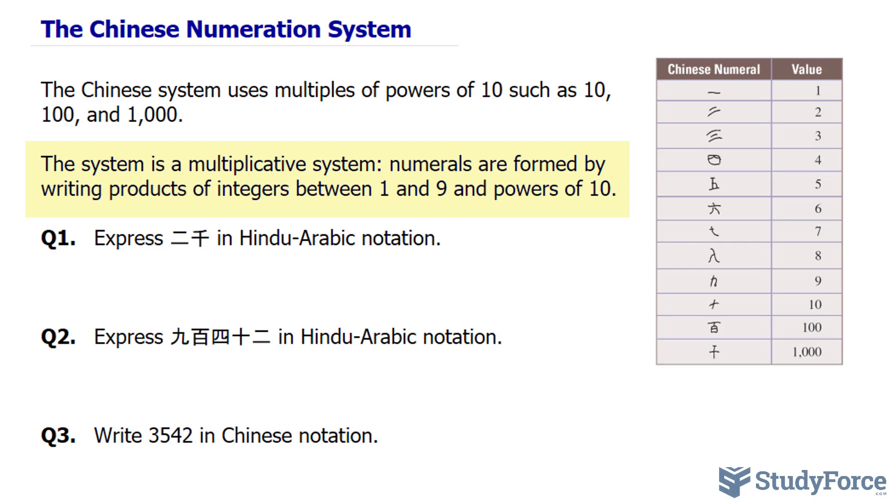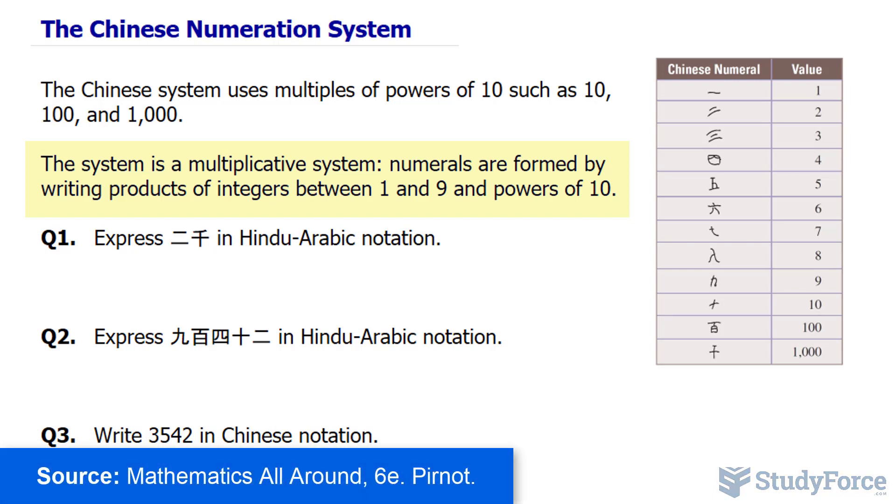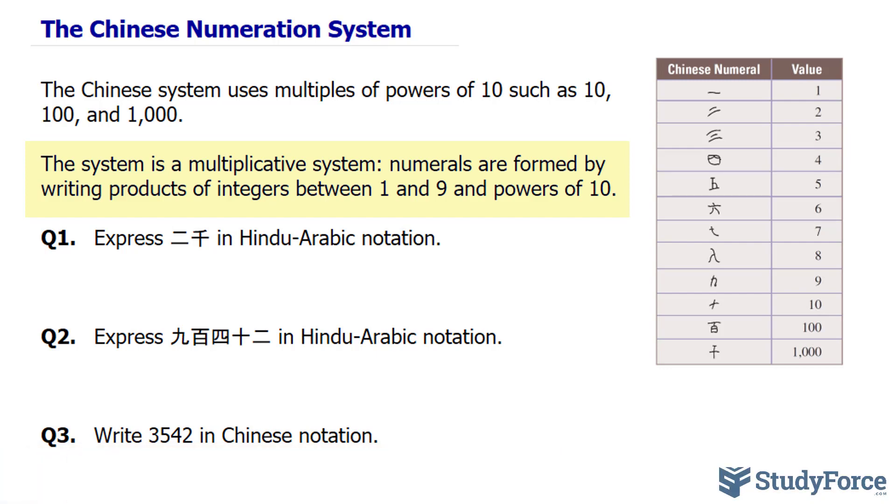This system is a multiplicative system, which means numerals are formed by writing products of integers between 1 and 9 and powers of 10.